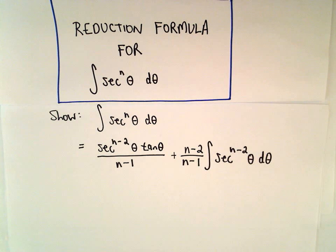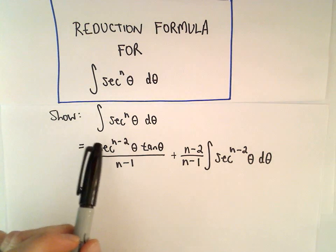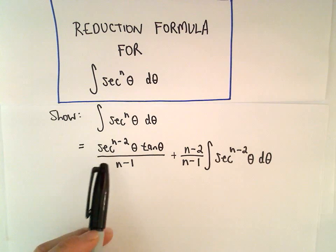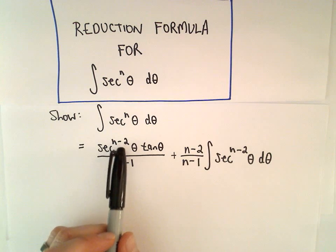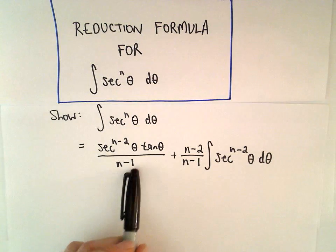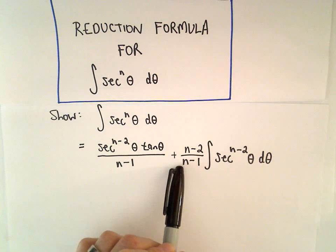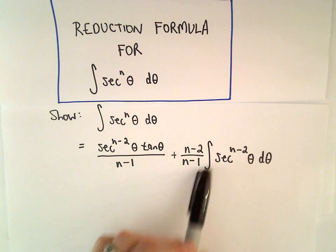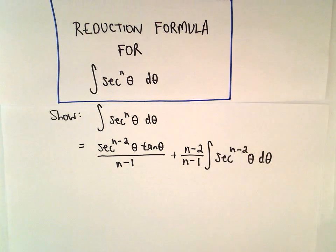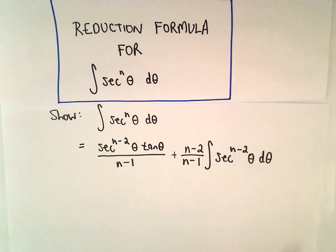Here I'm going to prove a reduction formula for ∫sec^n(θ)dθ. What we're going to show is that if we find the antiderivative of that, we'll get sec^(n-2)(θ)·tan(θ) divided by (n-1), plus (n-2)/(n-1) multiplied by the integral of sec^(n-2)(θ)dθ.